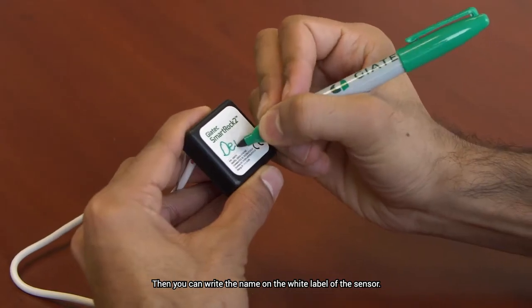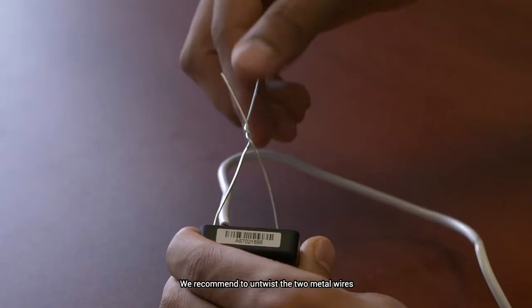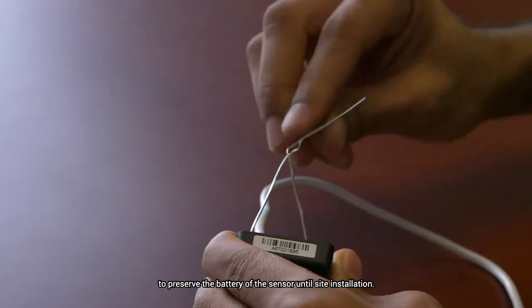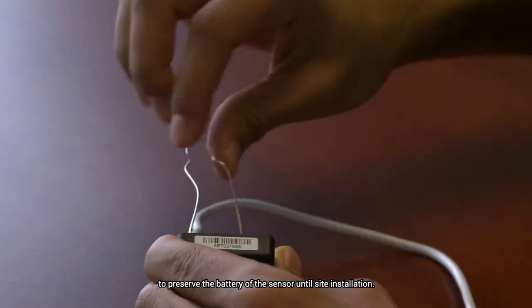Then you can write the name on the white label of the sensor. We recommend to untwist the two metal wires to preserve the battery of the sensor until site installation.